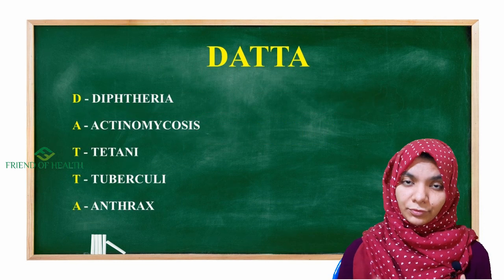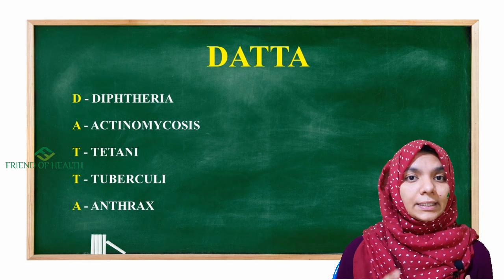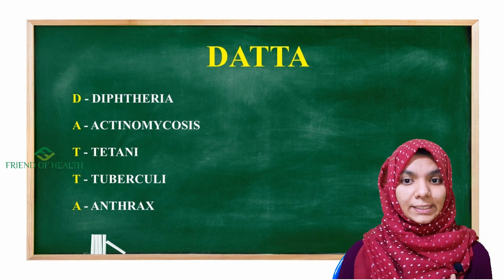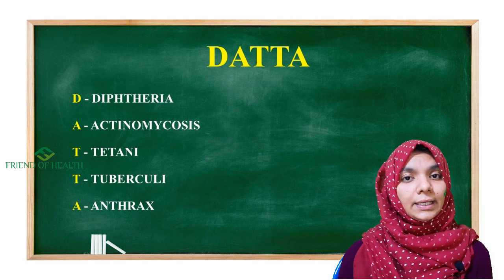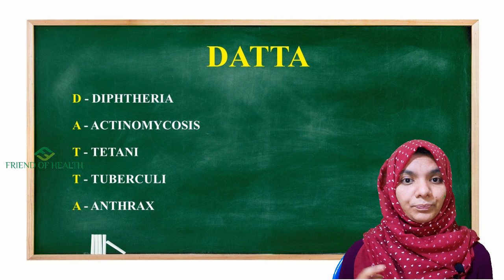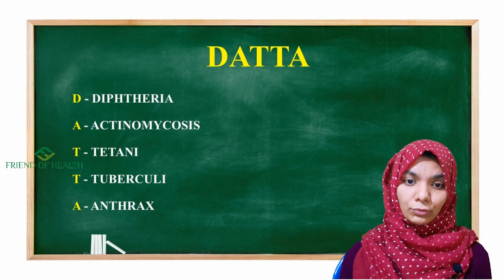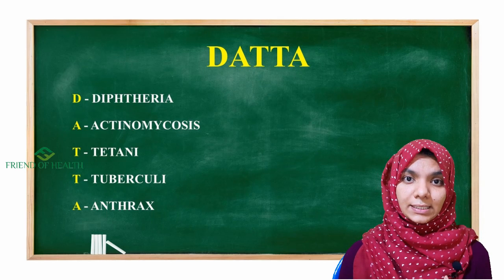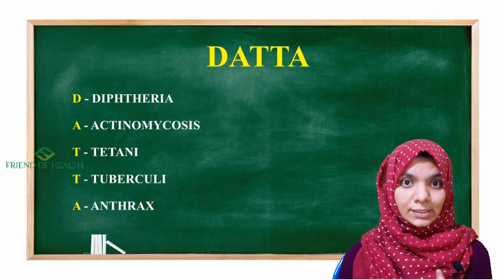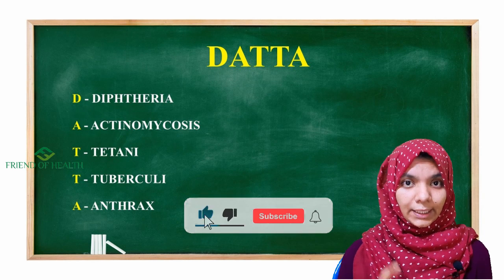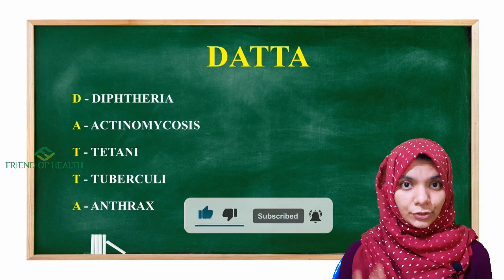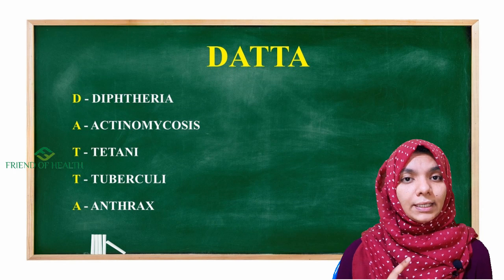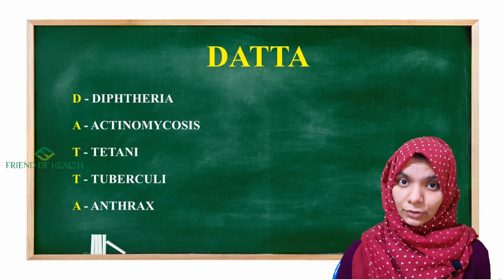DATTA: D is for Diphtheria — diphtheria comes under bacilli bacteria but it is gram positive, not gram negative. A is for Actinomycosis. The first T is for Tetanus, that is Clostridium tetani. The second T is for Tuberculosis. And the final A is for Anthrax — Bacillus anthracis. So: D for Diphtheria, A for Actinomycosis, T for Tetanus, T for Tuberculosis, A for Anthrax.